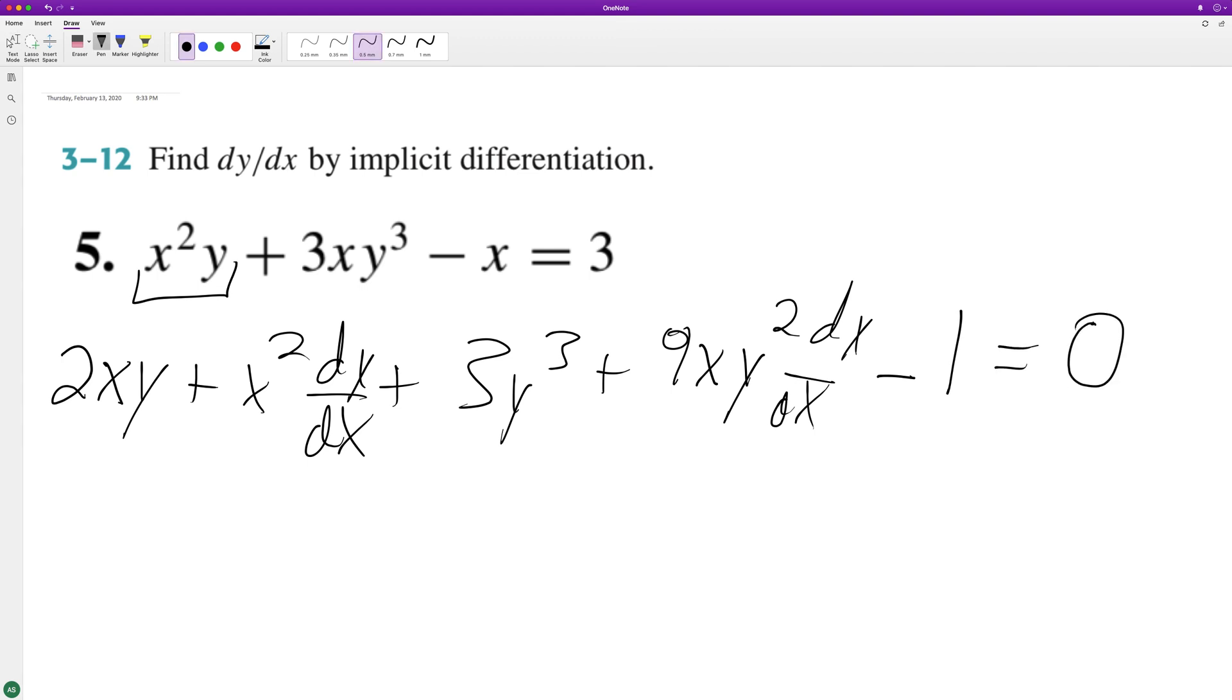This equals 0 since the derivative of the constant 3 is 0. Now we'll move everything over that doesn't contain a dy/dx component and factor out the dy/dx. That's going to be x squared plus 9xy squared.